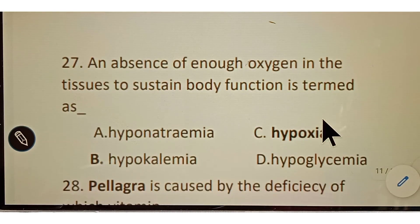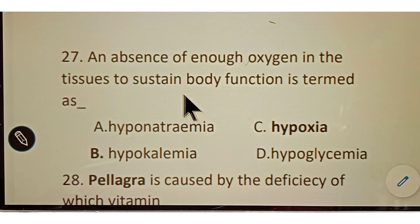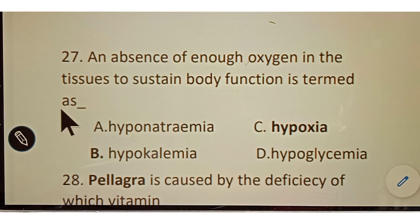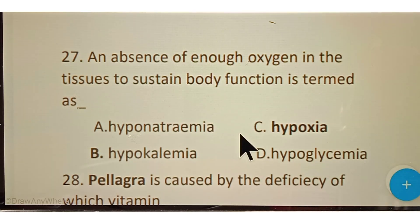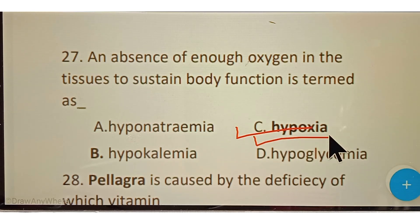Question number twenty-seven: an absence of enough oxygen in the tissue to sustain body function is termed as? Options given: A. Hyponatremia, B. Hypokalemia, C. Hypoxia, D. Hypoglycemia. The correct answer is option C, Hypoxia. Hypoxia is a condition in which there is not enough oxygen in the tissue.